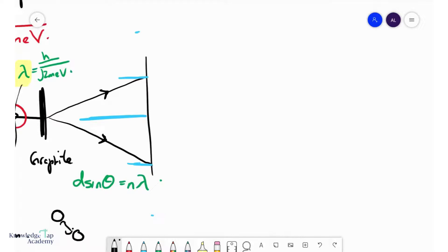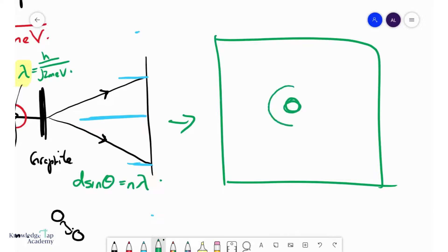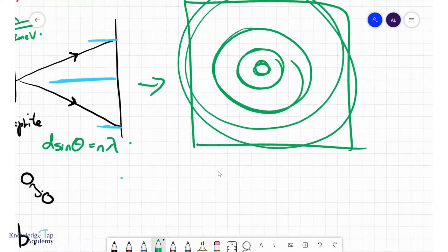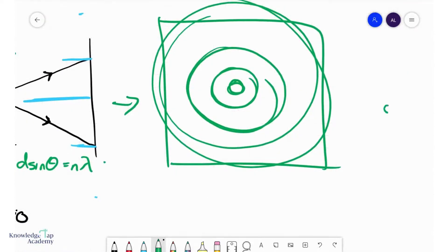Now, just to be clear, what you will actually see on the screen is a circular diffraction pattern that looks something like that. And that is because your graphite, remember, it's not just a series of slits in one direction. Your atoms form a macromolecular structure. And so there are slits, or a series of so-called slits in every single direction. And so you are forming diffraction patterns, again, in all directions.